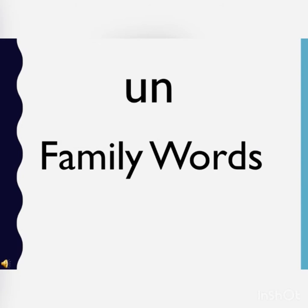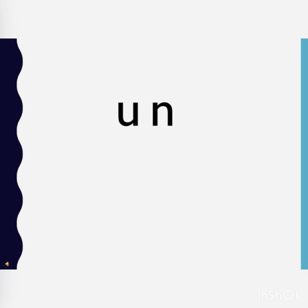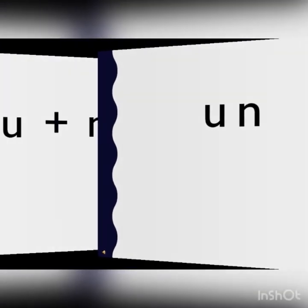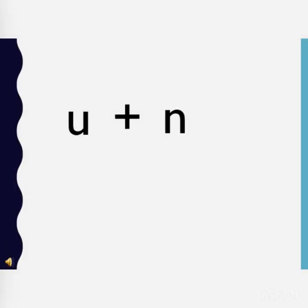The family word we are going to do today is UN. Now children, you can see the letter U on the screen. U says 'uh.' Joining U is the letter N, and N says 'n.' So children, when U and N are written together, the sound that they make is UN.